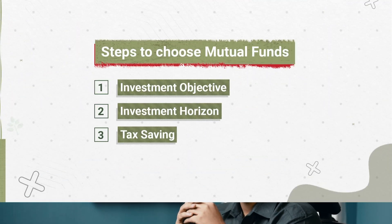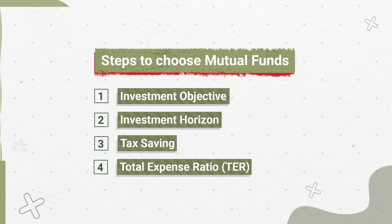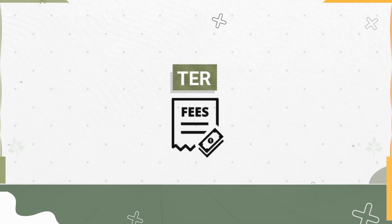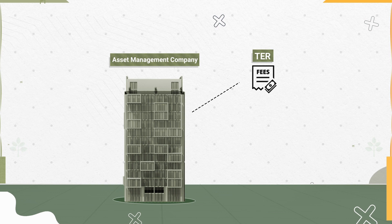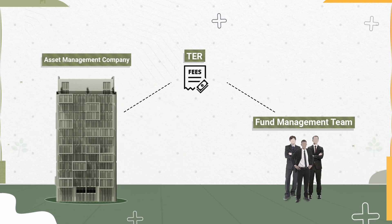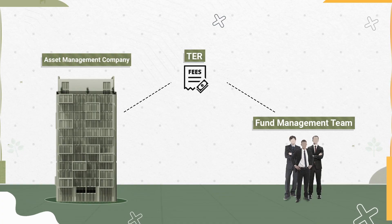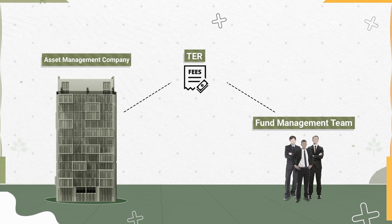The next parameter is the Total Expense Ratio, or TER — the charges levied by the AMC or mutual fund company. These are charges by the fund management team to manage your investments and provide excess returns over the markets. However, these expense ratio charges can eat into your portfolio returns over a long period of time. Therefore, it is better to invest in mutual funds that have a lower expense ratio.